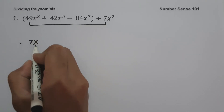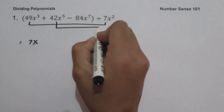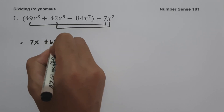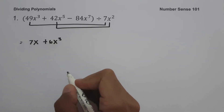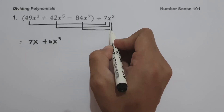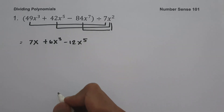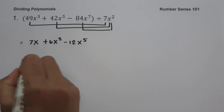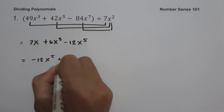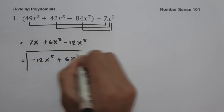So we are going to have 7x. Then 42x raised to 5 divided by 7x squared is 6x cubed. And negative 84x raised to 7 divided by 7x squared is negative 12x raised to 5. Writing our final answer in descending order: negative 12x raised to 5 plus 6x cubed plus 7x. And this will be our answer.